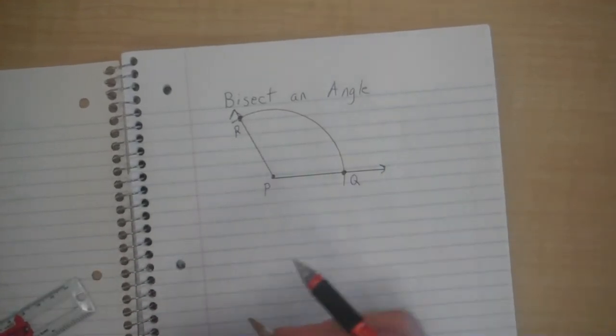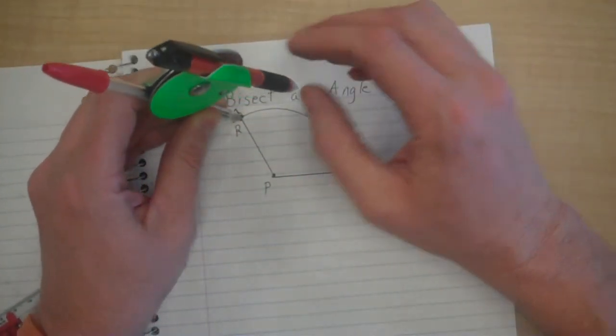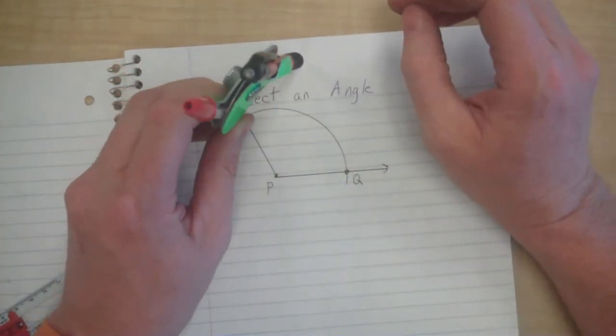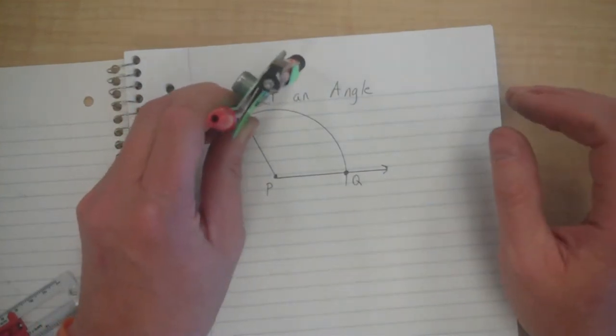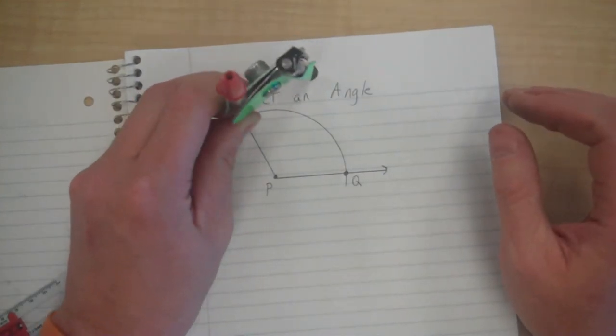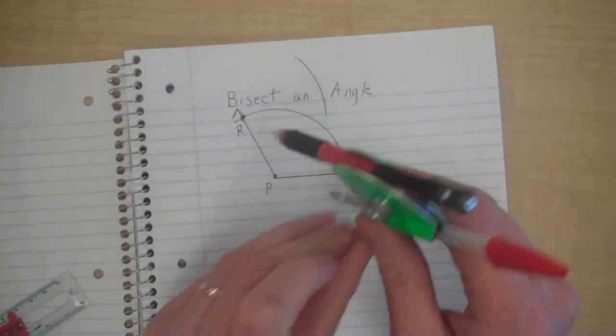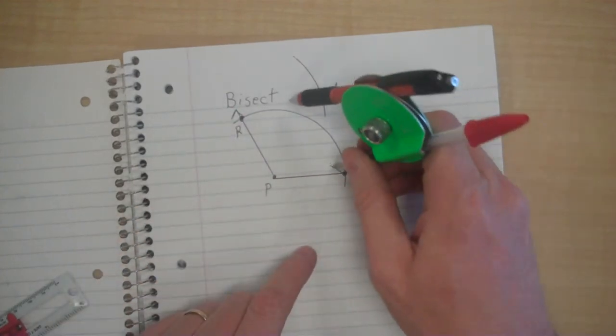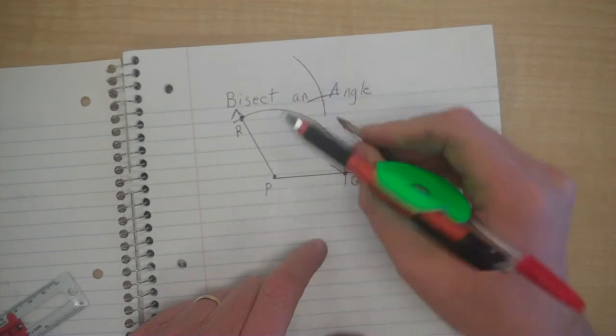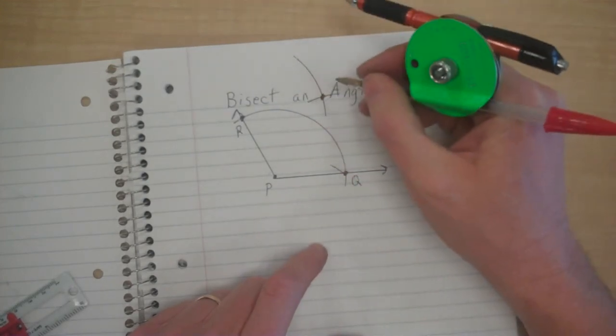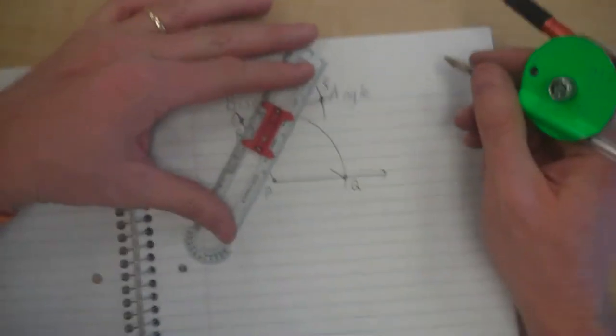The next step, I'm going to change the setting. I'm going to make it a little wider. I'm going to put my pivot on R and draw an arc. Then I'm going to move my pivot over to Q, from the first arc we drew, and draw another arc right there. And this point where they meet I'll call point S.